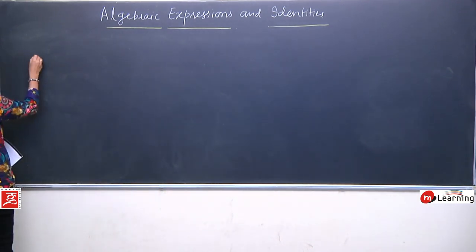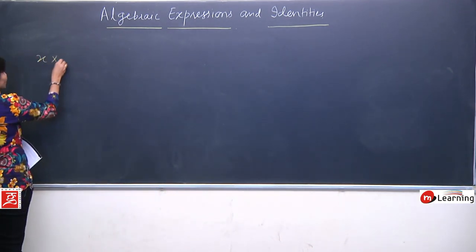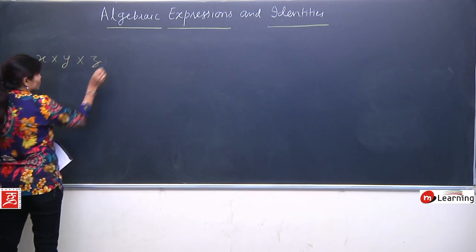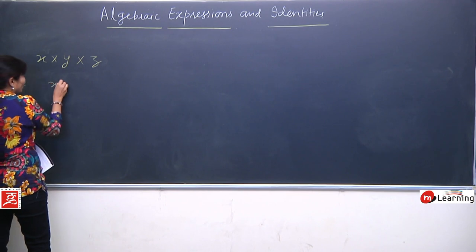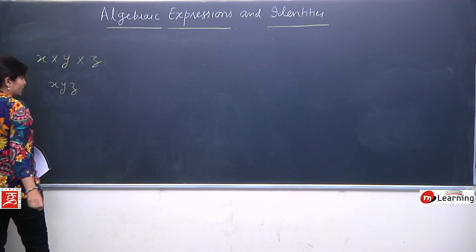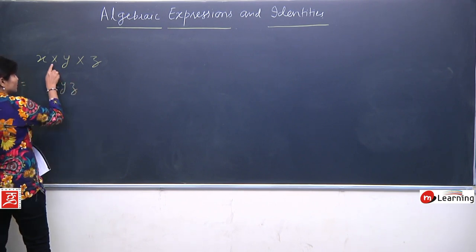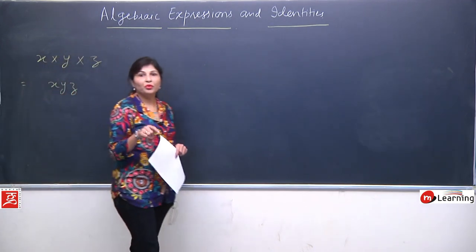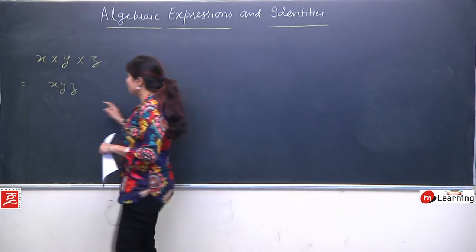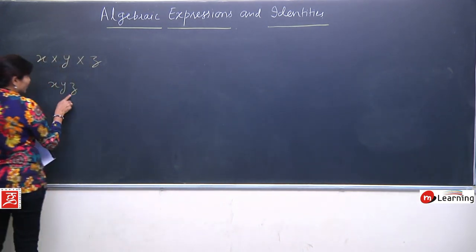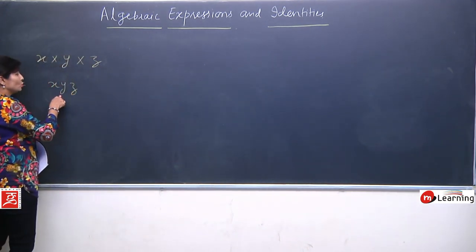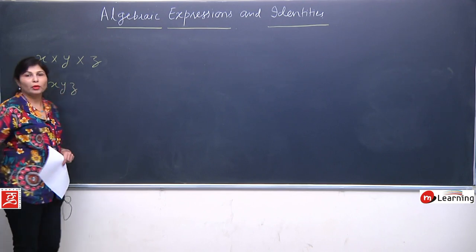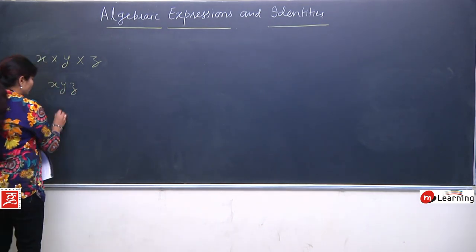Before starting the examples, let me do some repetition. If we have x into y into z, then we can write xyz — there is no need to put a multiplication sign in between the variables. If we have xyz written like that, this itself shows x is multiplied by y and y is multiplied by z.